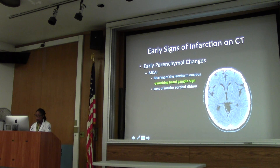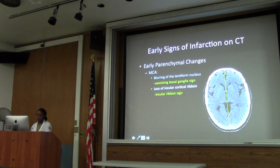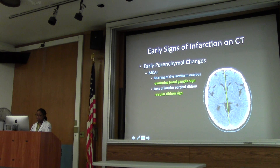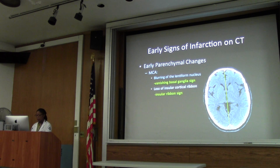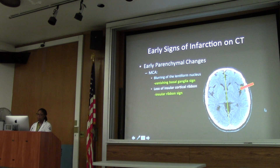We have blurring of the lenticular nucleus - we're not really seeing it - and loss of that insular cortical ribbon. I like the idea of drawing a line down the midline and comparing left to right. You can clearly see a difference between the normal side and the affected side. We also like to get a history - if you're told there's right-sided weakness, then we'll look on the left side at the basal ganglia. The loss of that nice cortical distinction of the insular cortex is the insular ribbon sign.